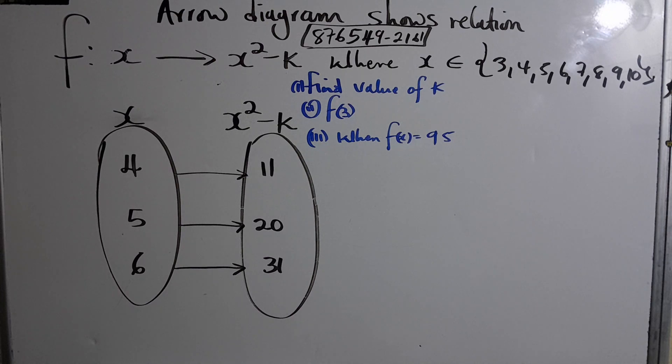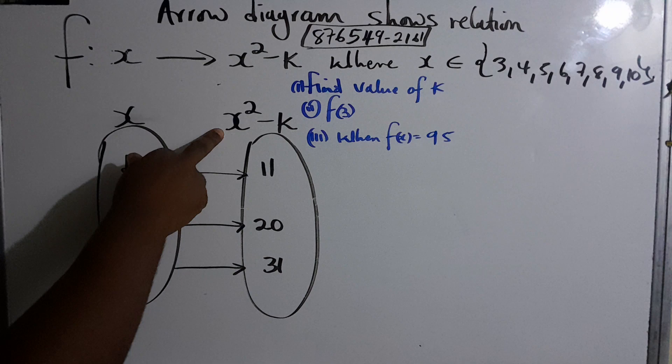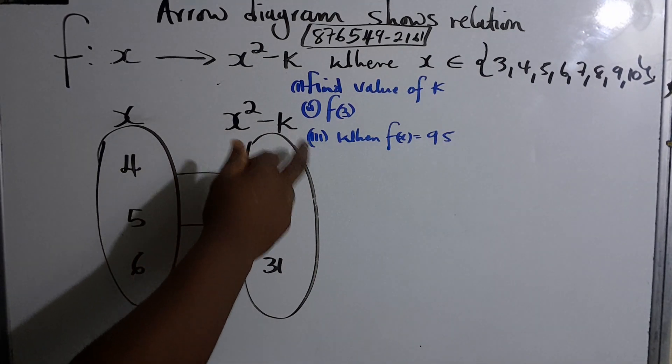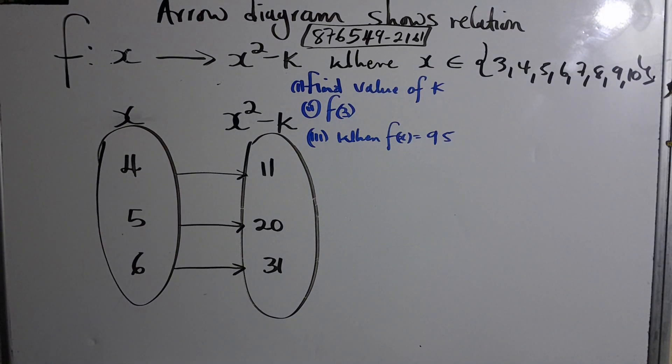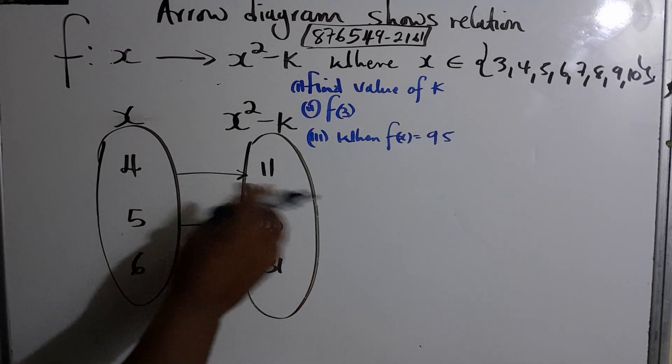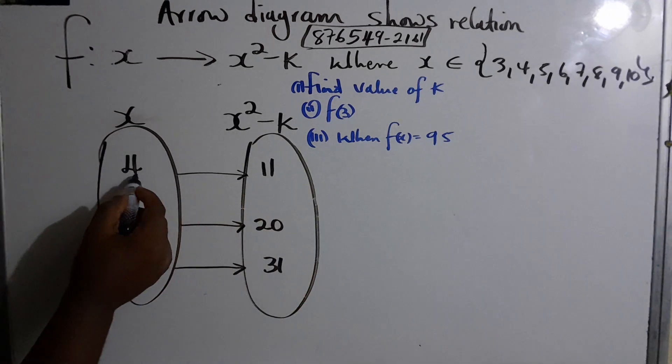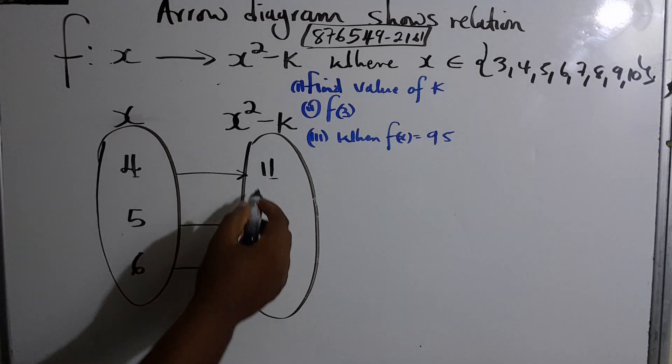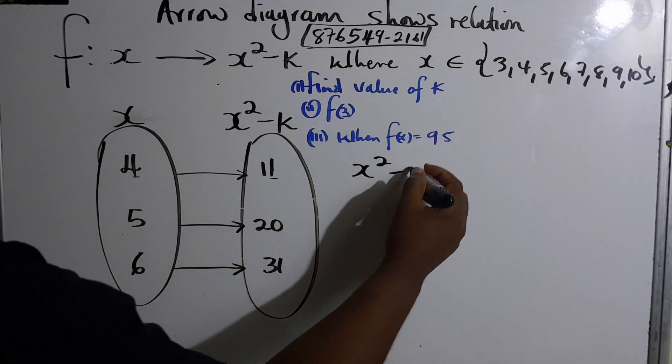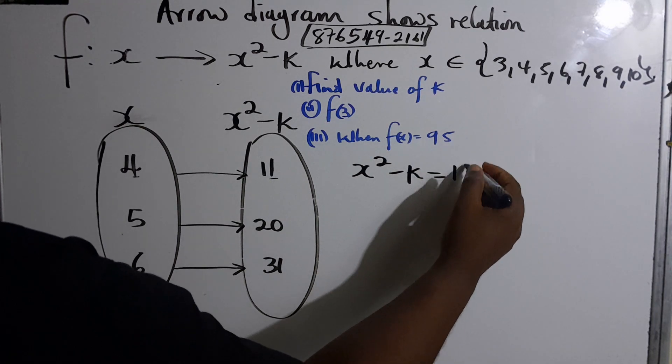Here they gave us the relation. They give us the values of x and say this is supposed to be x² - k and we get 11. They ask us to find the value of some constant k. This should be true for all values, so let's find k. We are given that x² - k = 11.